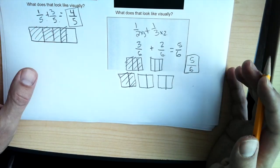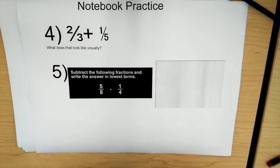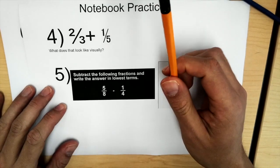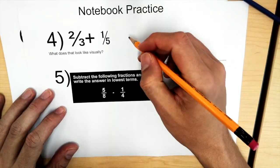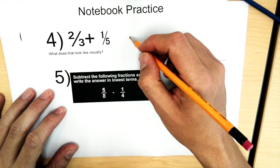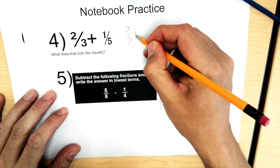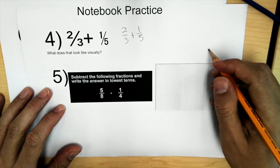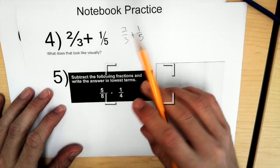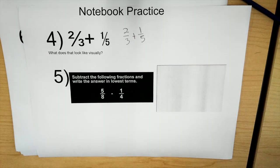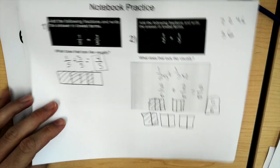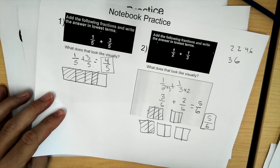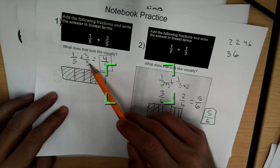If you don't get it now, no problem — we're going to do a whole bunch more examples. Let's look at another example. We have two-thirds plus one-fifth. Let's solve it using the procedure first. Remember that we want to find the least common multiple, or least common denominator — we want our denominators to be the same.